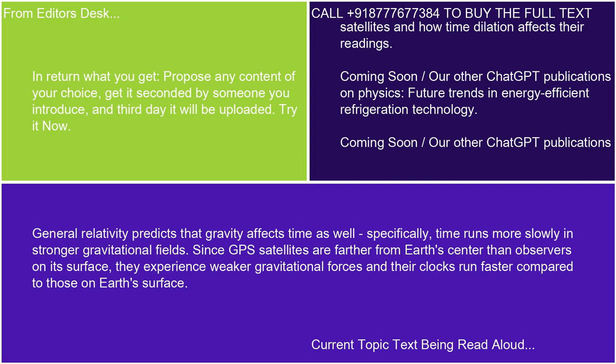General relativity predicts that gravity affects time as well. Specifically, time runs more slowly in stronger gravitational fields. Since GPS satellites are farther from Earth's center than observers on Earth's surface, they experience weaker gravitational forces, and their clocks run faster compared to those on Earth's surface.